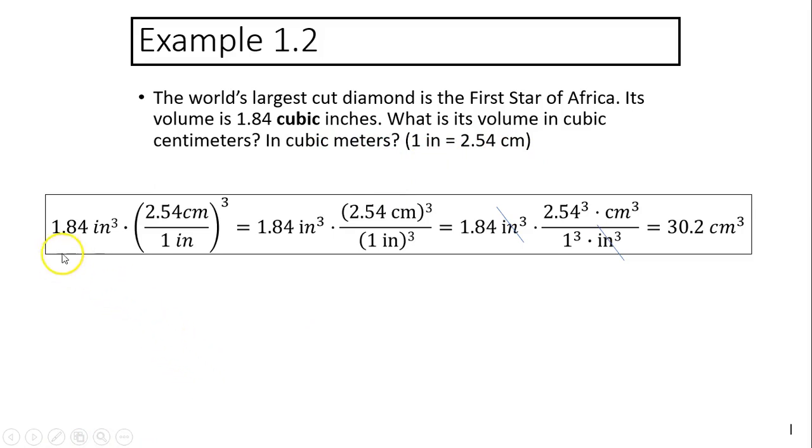How do we convert inch cubed to centimeter cubed? Again, inch on top, you have to divide inch. So 2.54 centimeters over 1 inch, but this is cubed. So you have to cube the whole expression, so the bottom will become inch cubed. See, this expression cubed equals top cubed divided by bottom cubed.